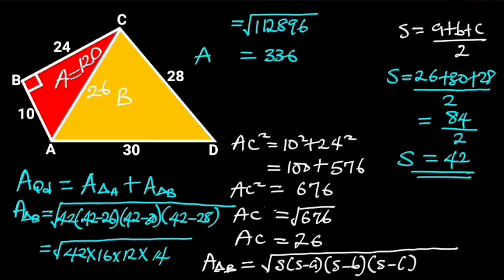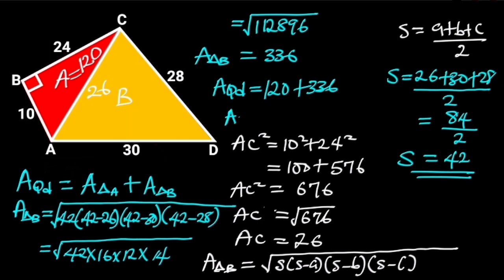So the area of triangle B is equal to 336 square units. Since the area of the quadrilateral is equal to the area of triangle A plus the area of triangle B, and the area of triangle A is 120 square units and the area of triangle B is 336 square units, 120 plus 336 is equal to 456. Hence, the area of the quadrilateral is equal to 456 square units.